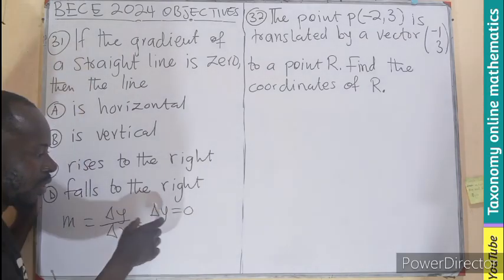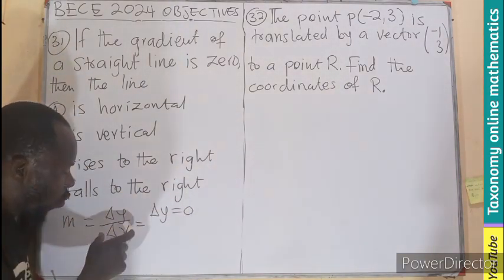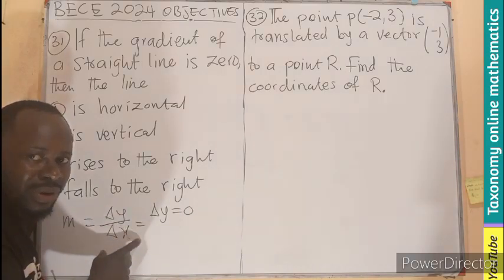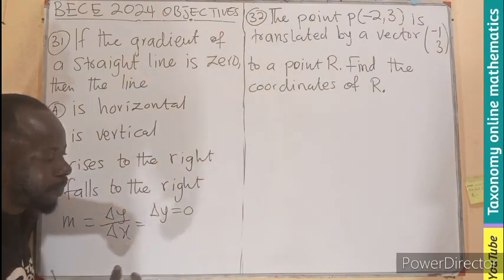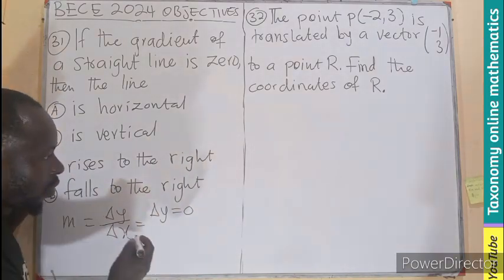So when the y-axis is zero divided by the x-axis, you'll be getting zero. When the x-axis is zero, then you'll become undefined. So now, which line will give us y to be zero? You know, if you have your partition plane...